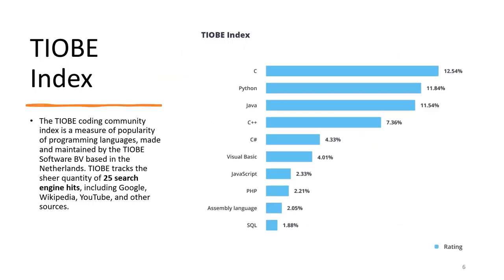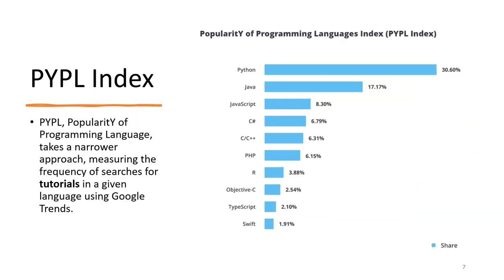There are many language indices to rank popularity. The TIOBE index tracks the top 25 search engine hits including Google, Wikipedia, and YouTube — in that ranking the top languages are C, Python, and Java. Another index is PYPL, which tracks searches for tutorials using Google Trends — the most common tutorials are for Python. The RedMonk index collects information directly from developers themselves, and Python ranks in second place.